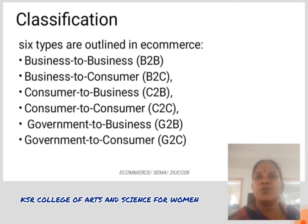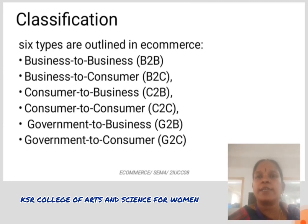2. Business to Customer: In this model, the company sells their products, goods, or services directly to the customer online. 3. Customer to Customer: Here, a consumer sells products, goods, or services to other consumers using the internet or web technology.